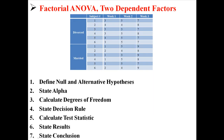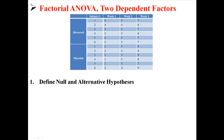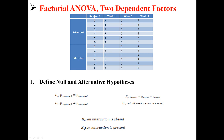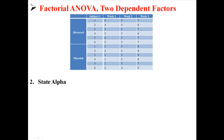Let's do a hypothesis test with our seven steps, starting with defining the null and alternative hypotheses. We're going to have three: one to test if divorced and married are any different, one to test if there's any difference between the three weeks, and one to test if an interaction is present or not. Next we state alpha, which is easy — use .05.